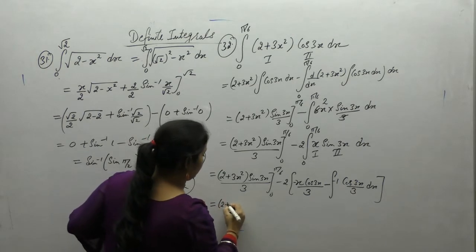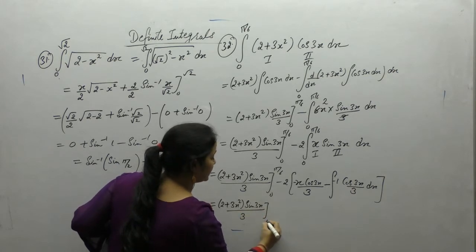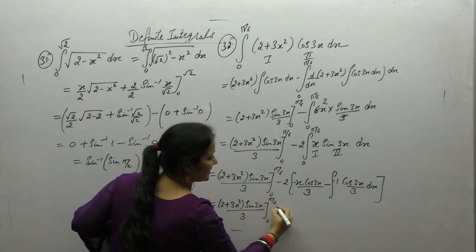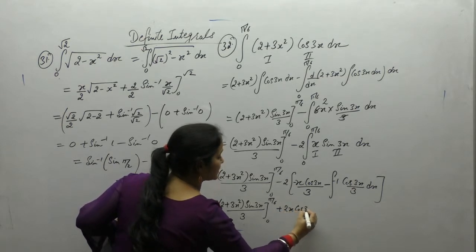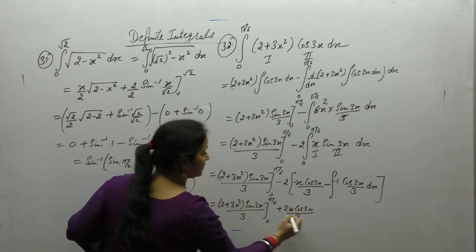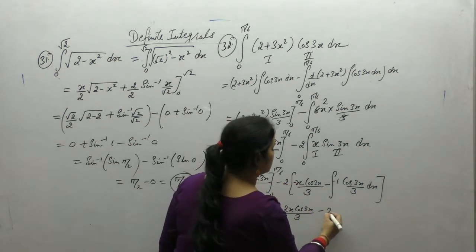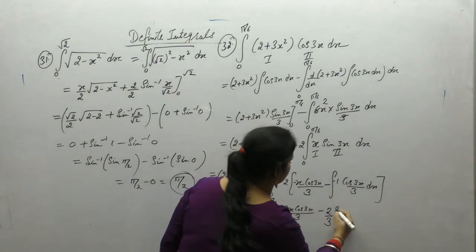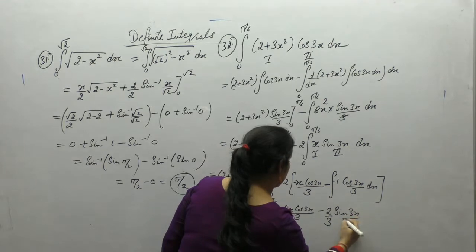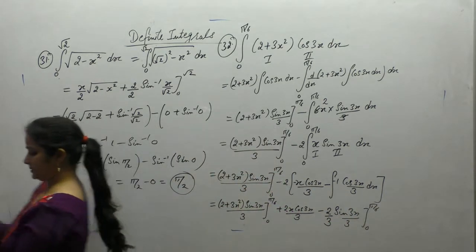(2 + 3x²) sin(3x)/3, limit 0 to π/6, plus 2x cos(3x)/3, minus minus gives plus, and minus 2/3 times integral of cos is sin(3x)/3, limit 0 to π/6.